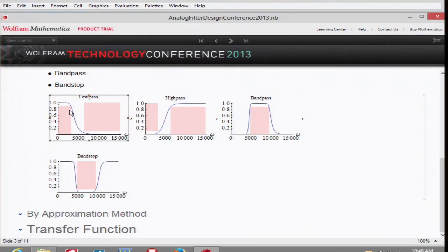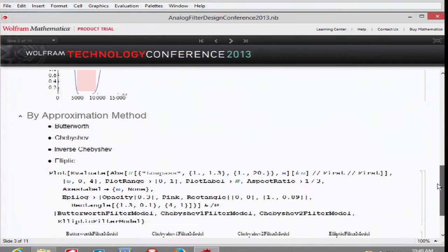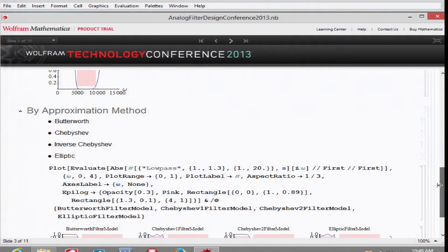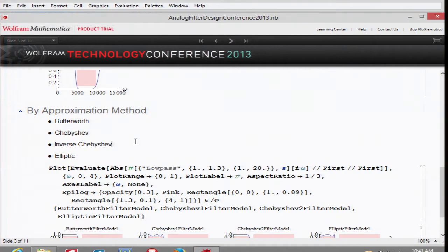By approximation method, what does that mean? These pink rectangles actually represent ideal filter response. Of course, in practice, we don't have that. So approximation method really tells us how close is a certain response to ideal. Of those, we have four major categories: Butterworth, Chebyshev, inverse Chebyshev, and elliptic. There are a few others, but I will be dealing with these four today.